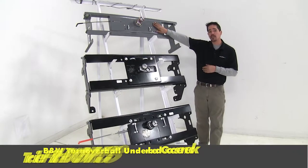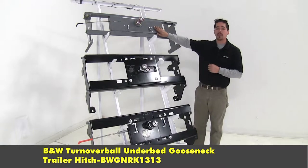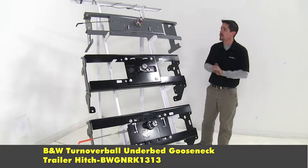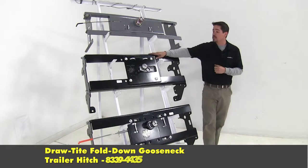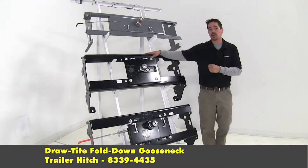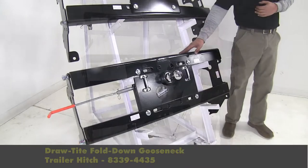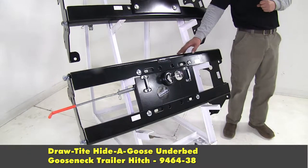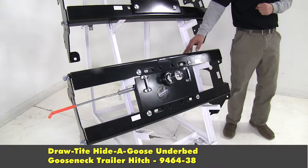Here we're going to have our B&W, and that's going to be the turnover ball under bed gooseneck trailer hitch part number BWGNRK1313. Now here we have the Drawtite fold down gooseneck trailer hitch and that's going to be part number 8339-4435. And finally on the bottom here we have the Drawtite Hide-a-Goose under bed gooseneck trailer hitch part number 9464-38.